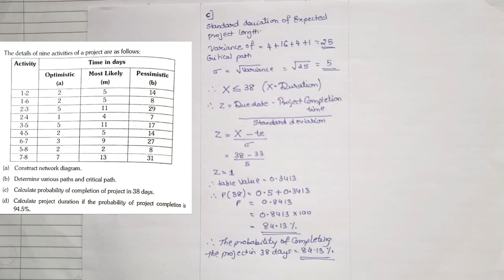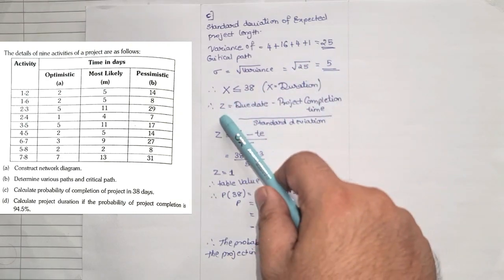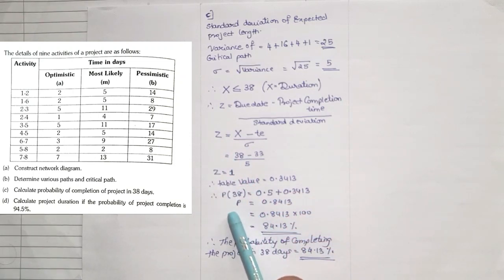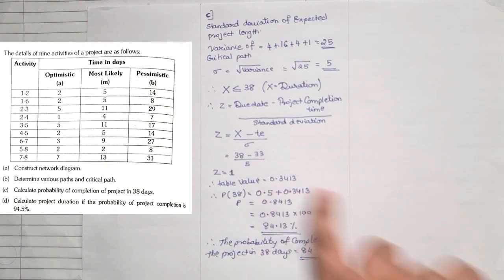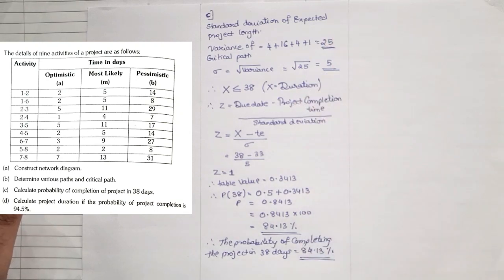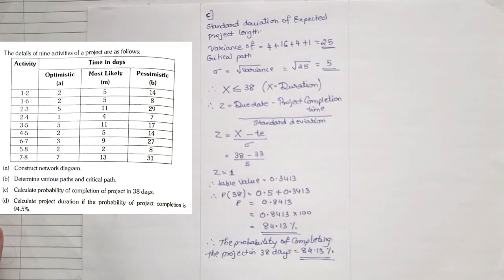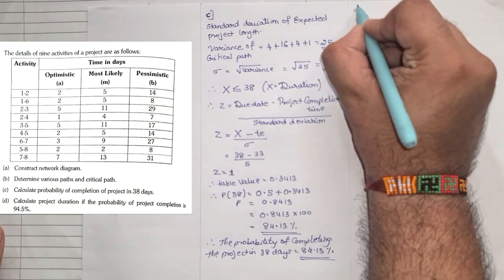To summarize step C: when a specific number of days is given and you need to find the probability, first find the standard deviation, then find the value of z, then look up the z-table, and apply the formula: probability = 0.5 + table value. Now for step D, the question gives probability = 94.5% and asks us to find the duration — this is the reverse order.